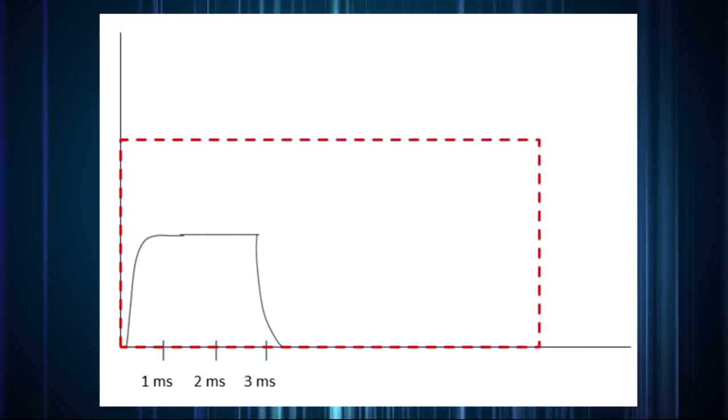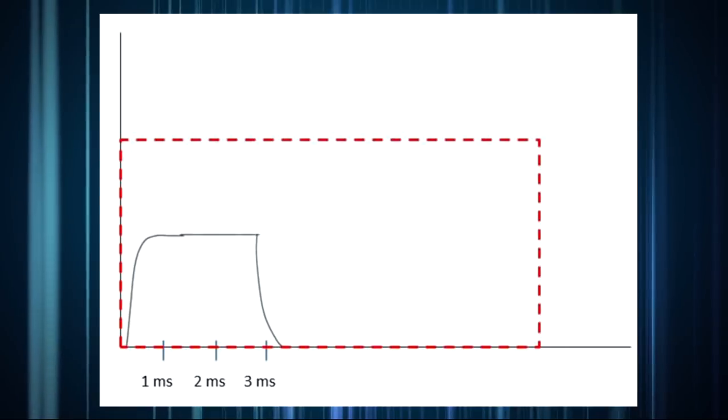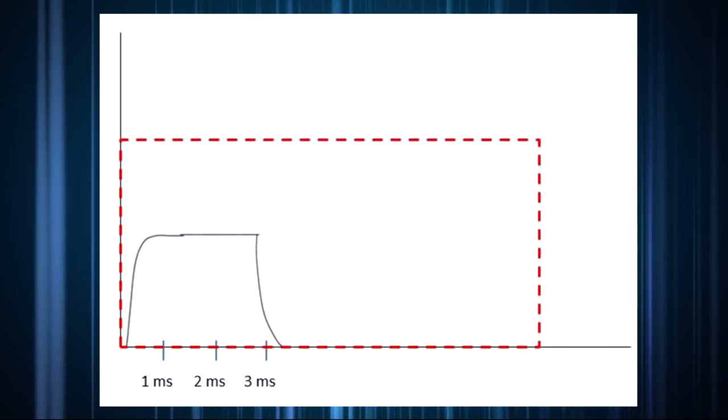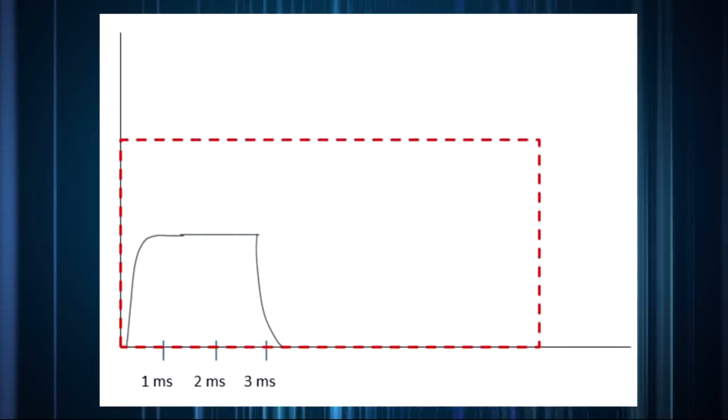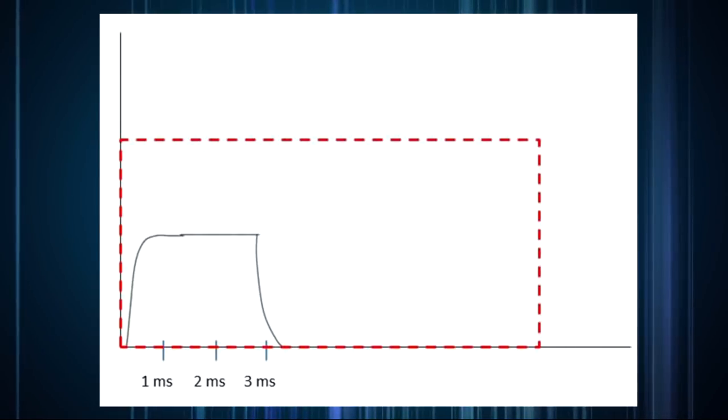If on the other hand, the maximum pulse width setting is set to much longer than the actual laser pulse width, that's going to allow some extra noise to get in. In general, one should choose the shortest maximum pulse width setting that's still definitely longer than the actual laser pulse.